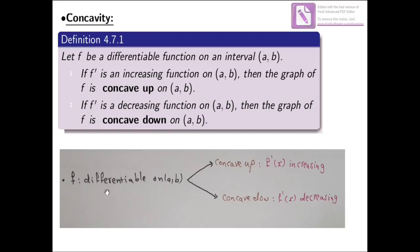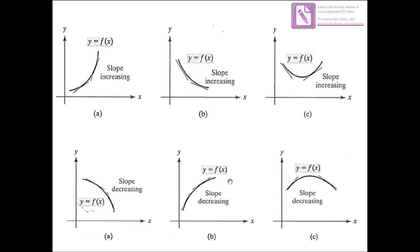If our function f is differentiable on the open interval (a, b) and f' is increasing, that means our function is concave up. If f' is decreasing, then that means our function f is concave down. Here we have graphs of a function showing increasing slope and decreasing slope. For this one, we take the tangent line. If you take a point here and another point here and compare the tangent lines, this one will be less sharp than this one. So we say that the slope is increasing, meaning our function is concave up.